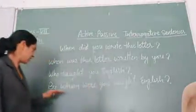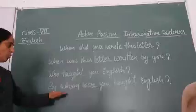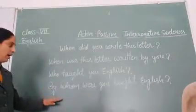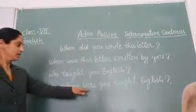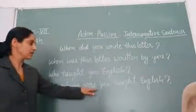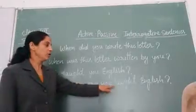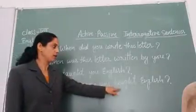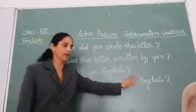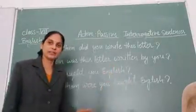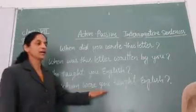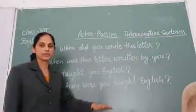Simple. 'Who' changes into 'by whom', followed by the helping verb of that tense, then subject, then the third form of the main verb. So: By whom were you taught English?